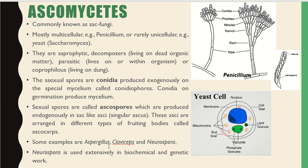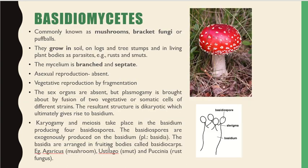Basidiomycetes are called mushrooms, bracket fungi, or puffballs. They grow in soil, on logs, on tree stumps, in living plant bodies, and as parasites. The mycelium is branched and septate.